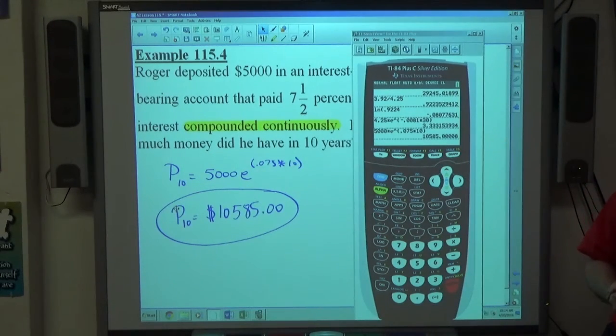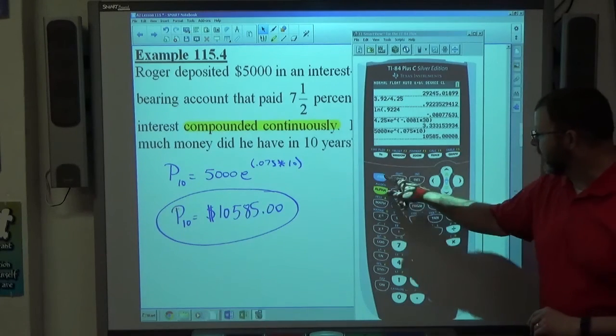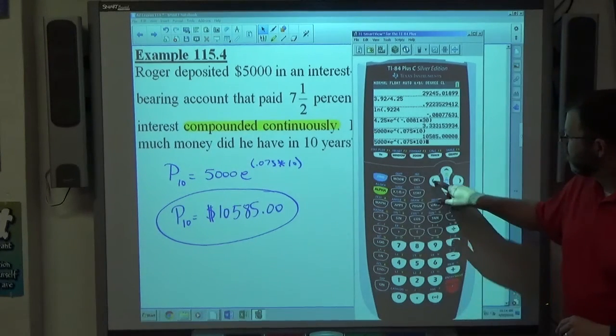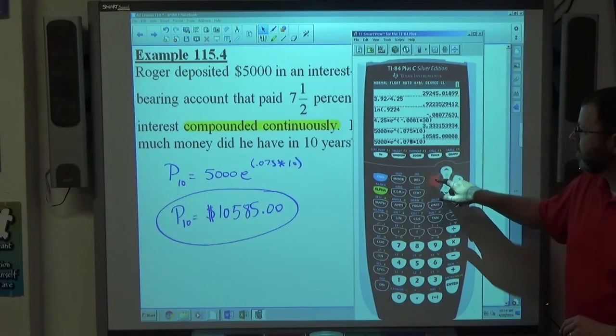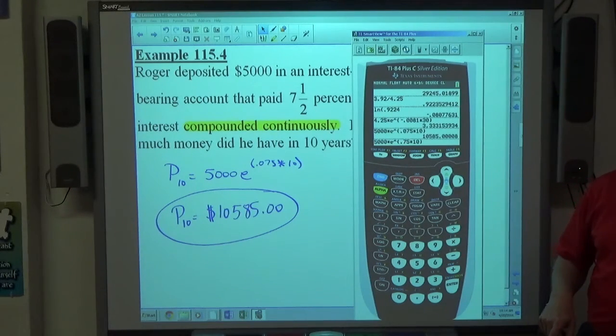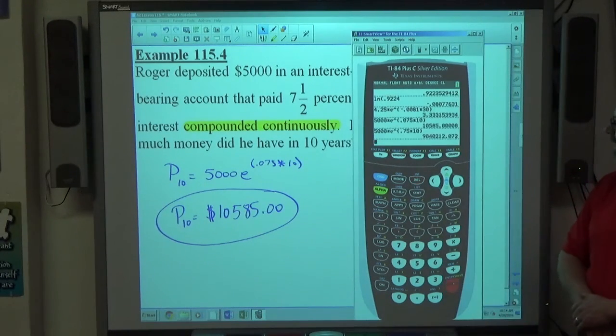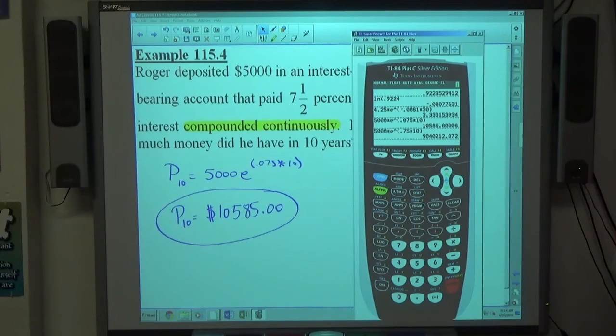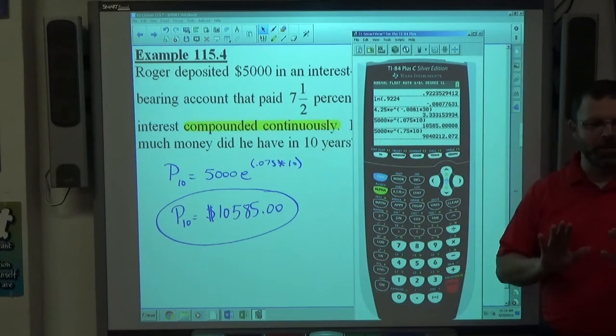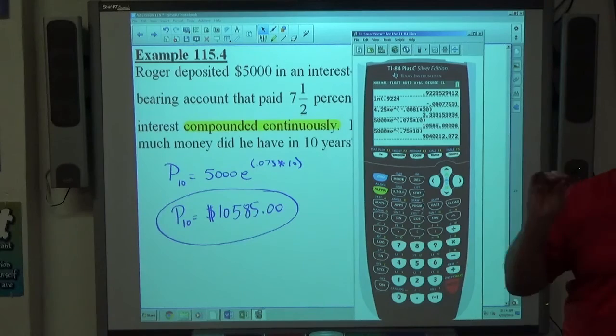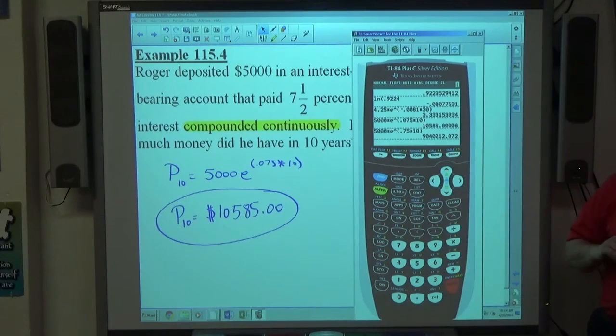Now, had Roger gone to a bank with a 75% interest rate, just to give you an idea, so if you put 0.75 instead of 0.075, it's just one decimal place, right? It shouldn't be that big of a difference. $9,040,212.07. So again, I want to go to your bank if you don't know how to change percents to decimals correctly, because I'll be rich.